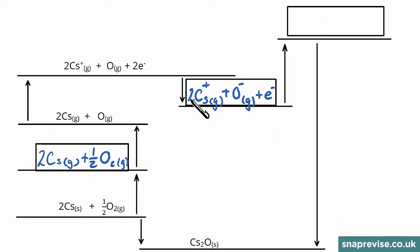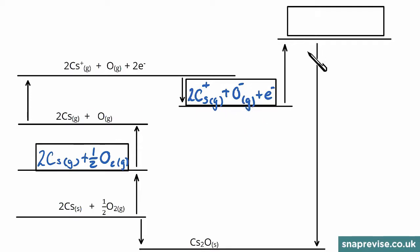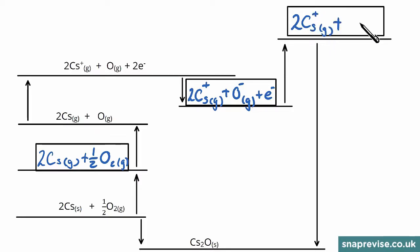Remember to include that spare electron, e⁻. In the final step we have the second electron affinity of oxygen, where we add the second electron to the O⁻ ion, giving us the gaseous ions needed for the lattice enthalpy step. The final box contains two Cs⁺ gaseous ions and one O²⁻ gaseous ion.